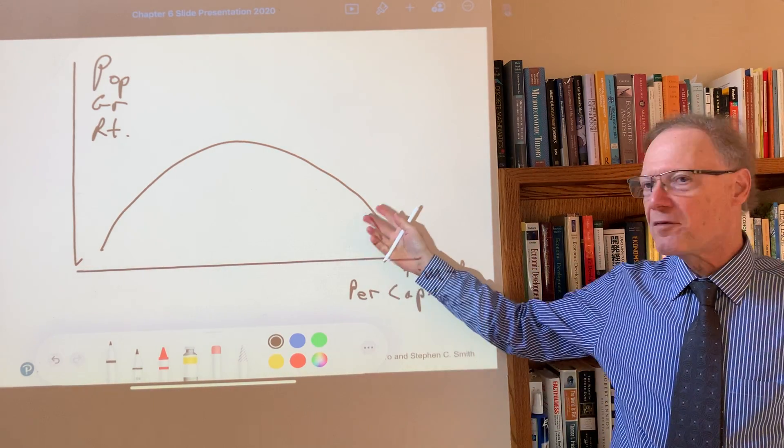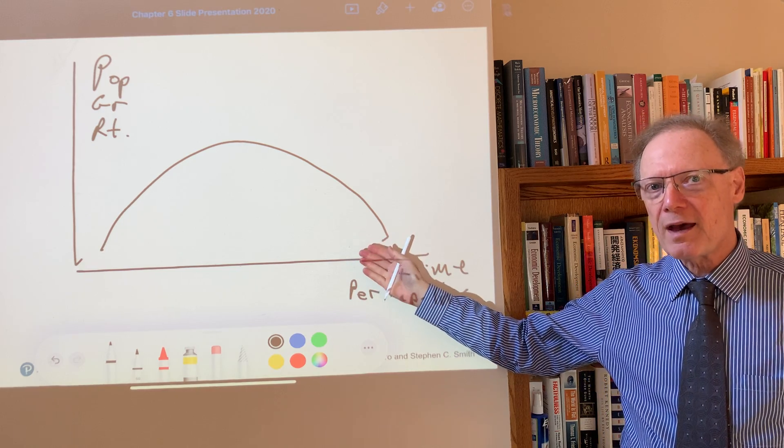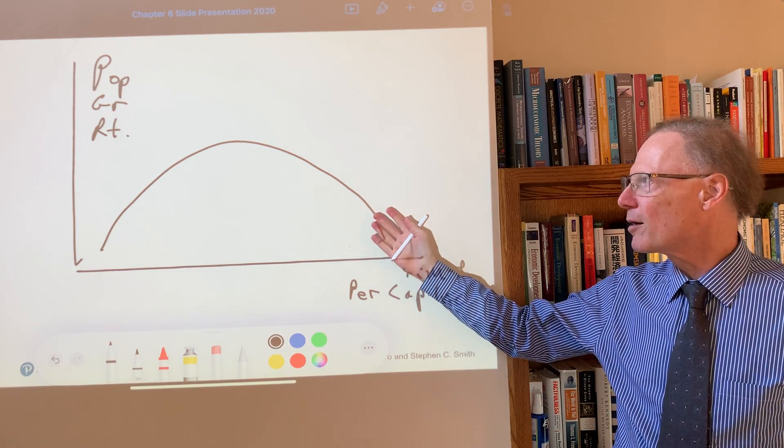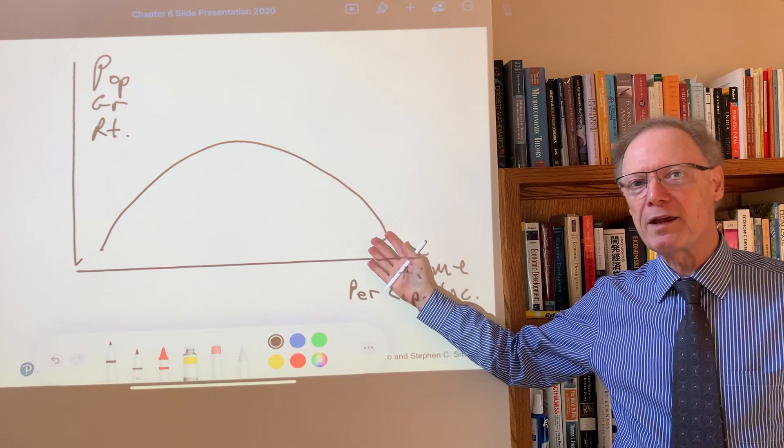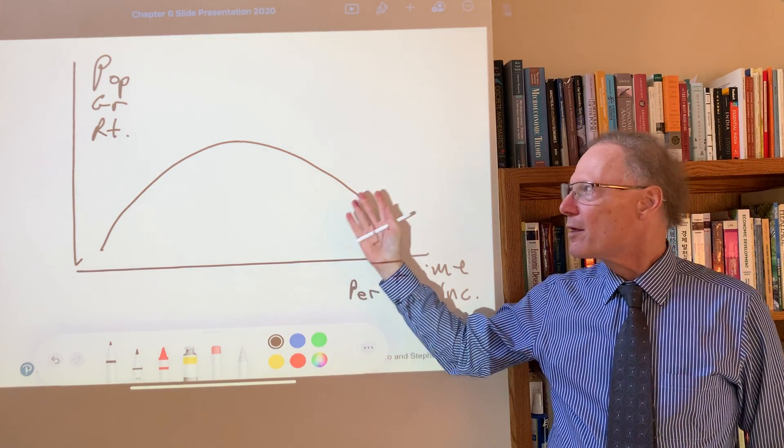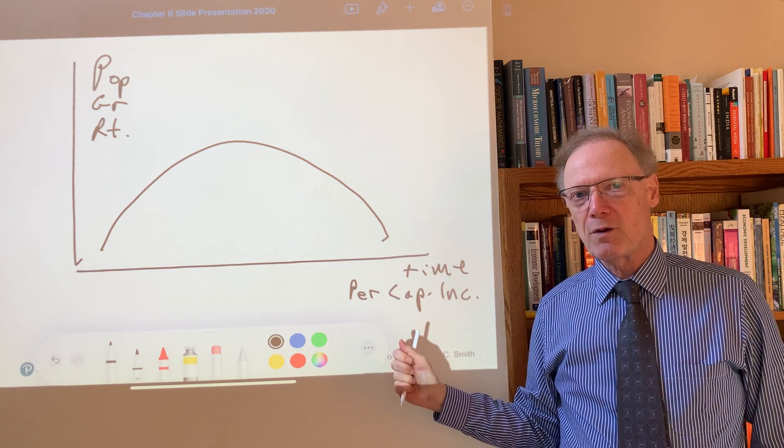And in terms of thinking about income per capita, how we might be trapped as a result in low income per capita, it can be useful to compare the population growth rate with the overall income growth rate.